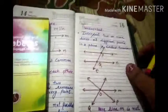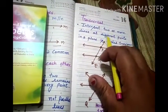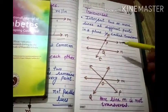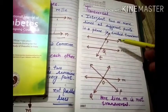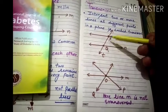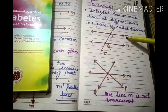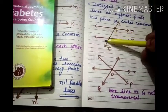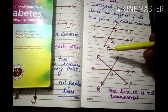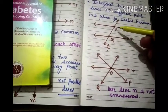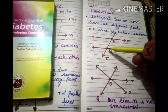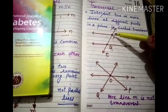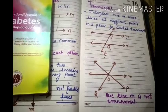Transversal line: a line that intersects two or more lines at different points in a plane is called the transversal line. When there are two or more lines — line M and line N are parallel lines, as you can see the distance is the same, they do not meet, no common point — and line T is the transversal line because it intersects line M at point P and line N at point Q. The intersection must be at different points, not the same point.